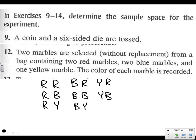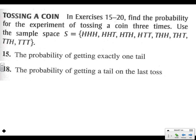Alright, moving on. Problem 18: Find the probability for the experiment, the probability of getting a tail on the last toss. Well, it gives us the sample space. There are eight possibilities. And how many of those have a tail on the last toss? Here's one, here's one, here's one, and here's one. So that's four out of eight, or one half, which is the same as saying 50% probability of getting a tail on the last toss.